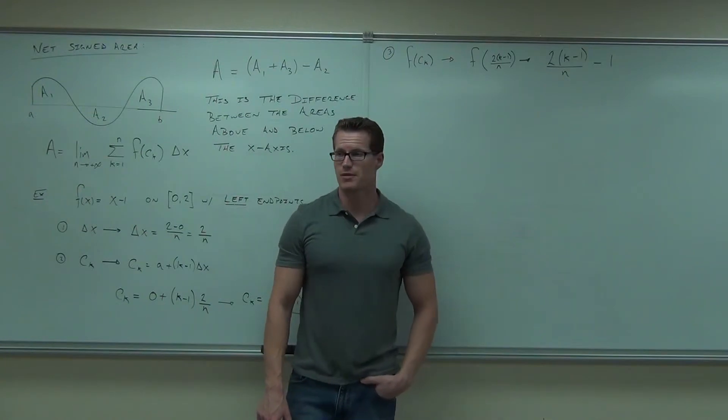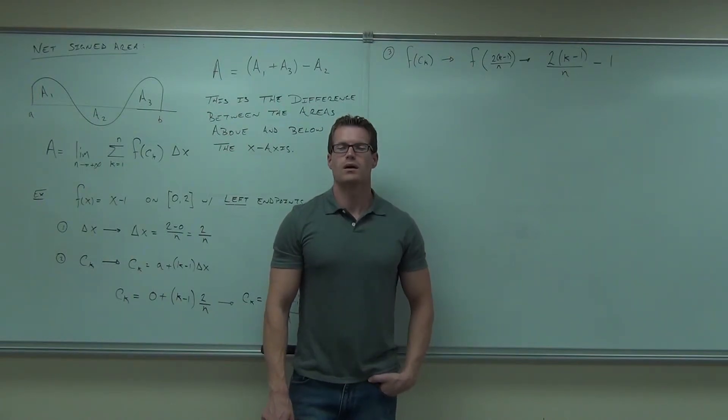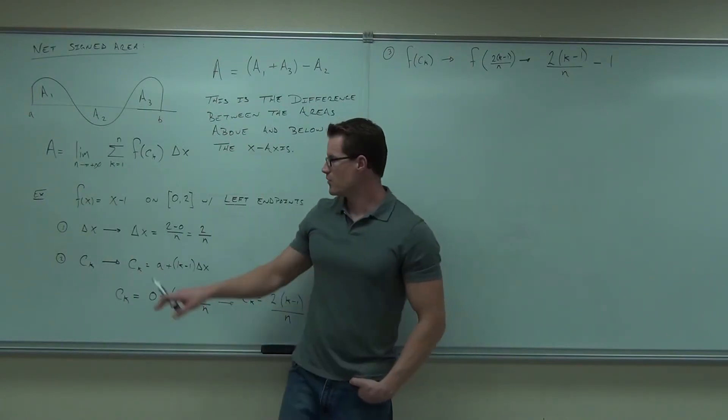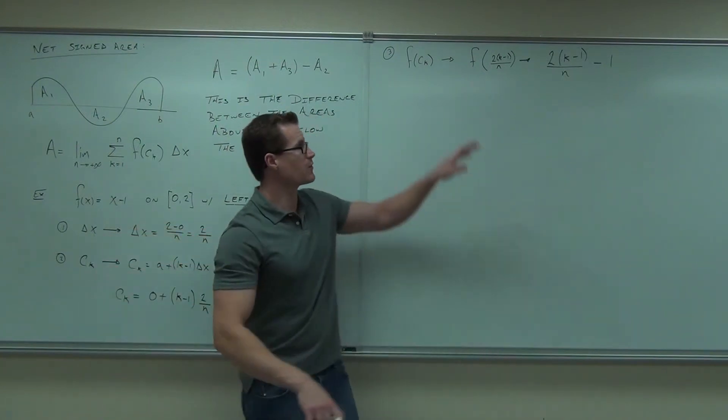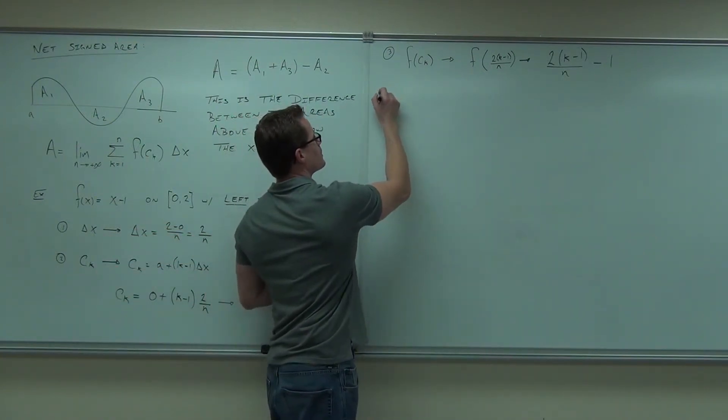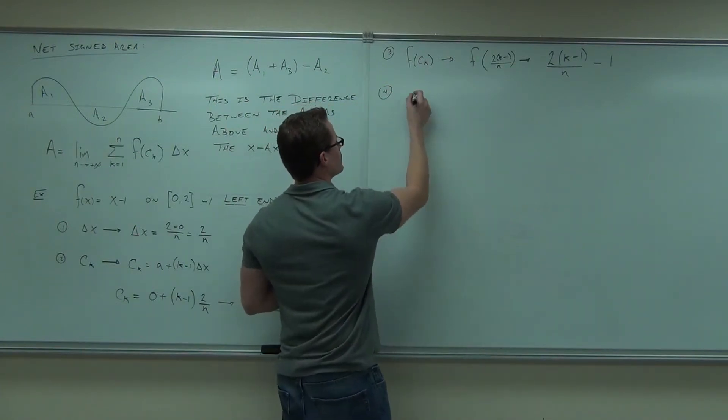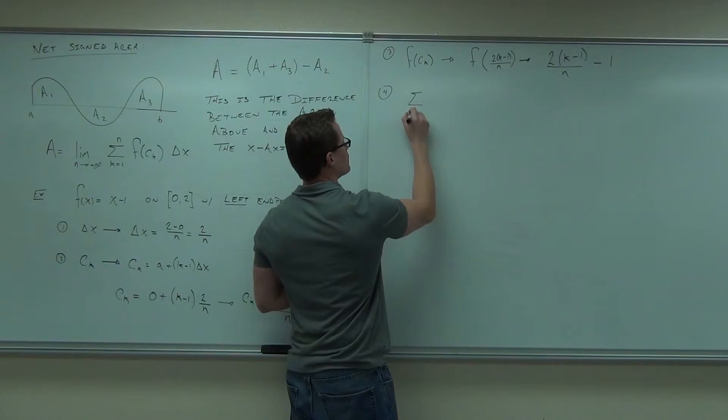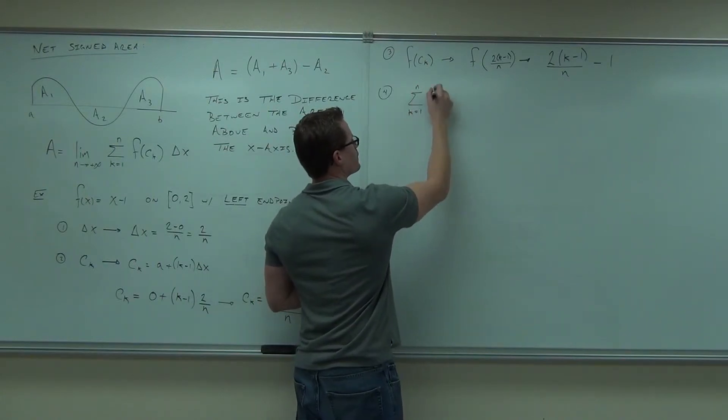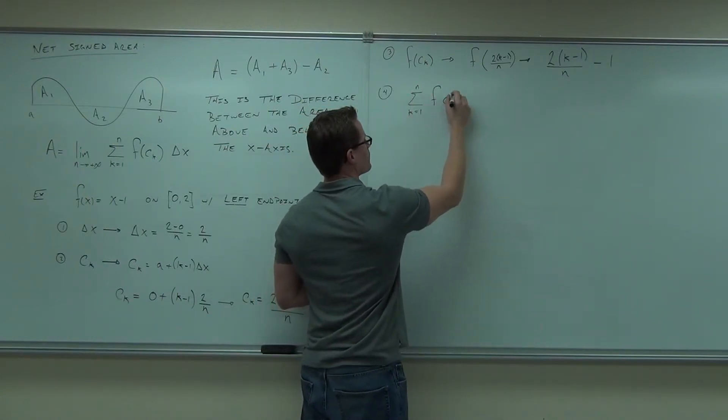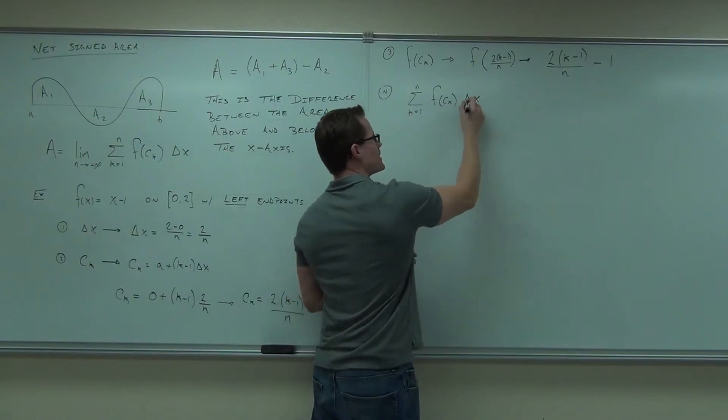So, what's the next step after that, after you've found our function? Do what now? Right now we have this, this. Okay, we've got our function. The next step, step number 4, is you're supposed to put this in your summation, right? Sum from k equals 1 to n.